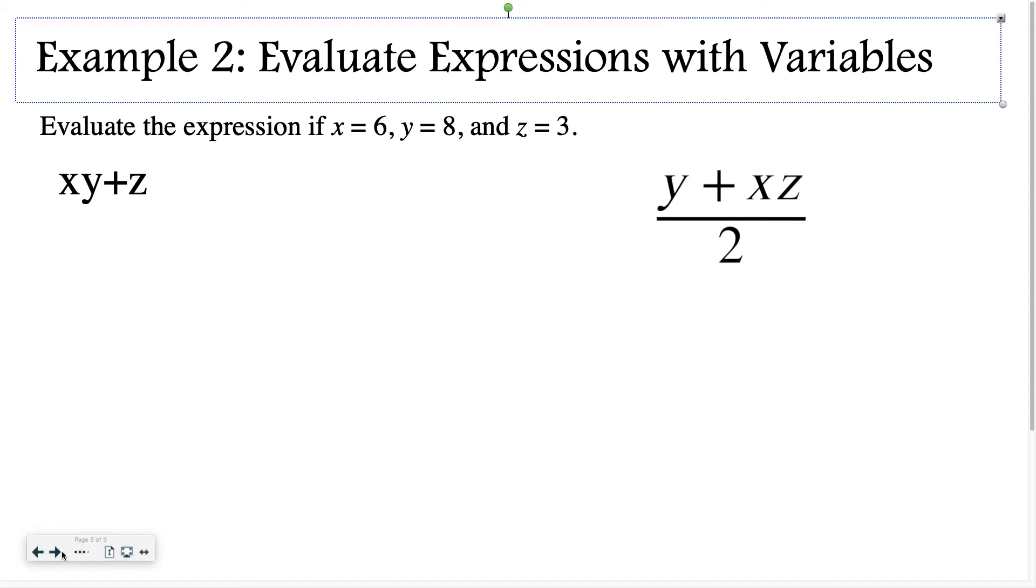Example two, evaluate expressions with variables. Evaluate the expression if x equals 6, y equals 8, and z equals 3. My first expression is xy plus z. So instead of x, I'm going to write 6. I like to put a multiplication symbol in between when I have two variables together. So I have 6 times y is 8, plus z is 3. Then order of operations, I start with my multiplication. 6 times 8 is 48. Then I just have addition left. 48 plus 3 is 51. And I am done with that problem.